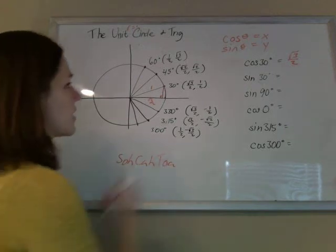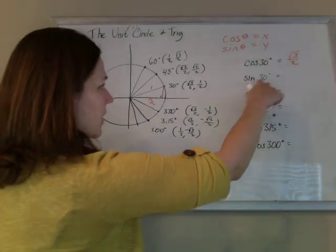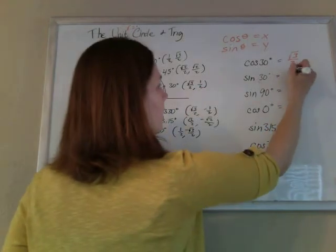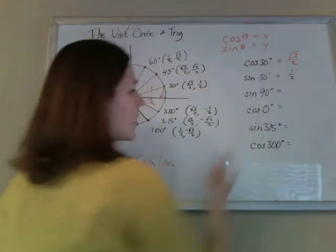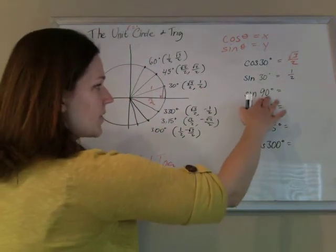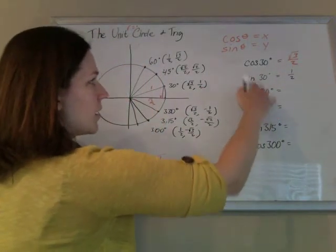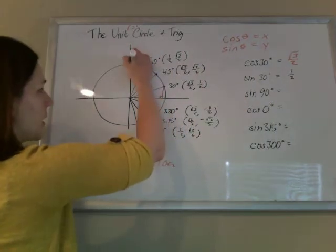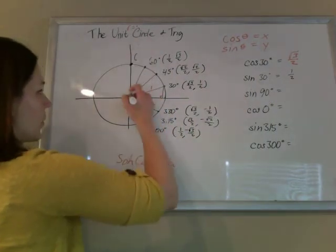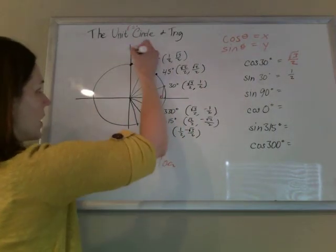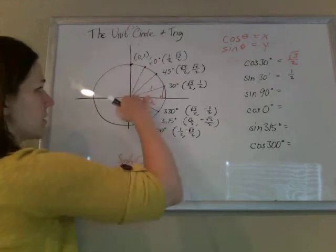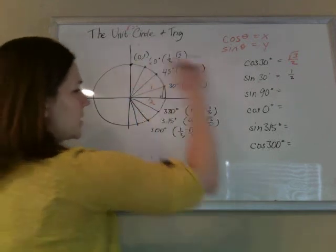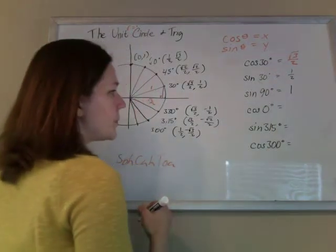The sine of 30 degrees is the y-value at 30 degrees, which is 1/2. The sine of 90 degrees is the y-value at 90 degrees up here. That point is 0 on the x and 1 on the y, because it's a radius of 1. So the sine of 90 is 1.